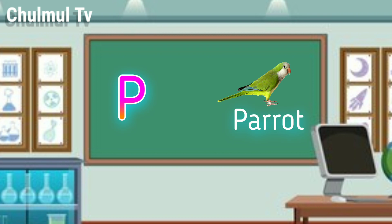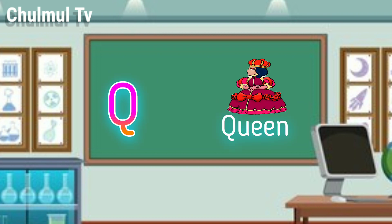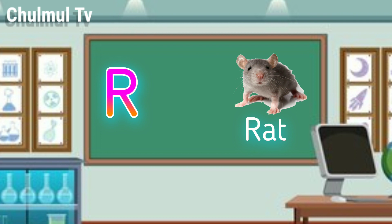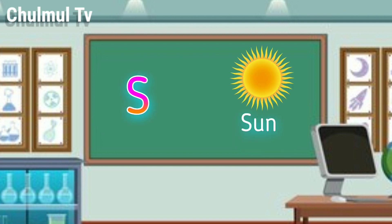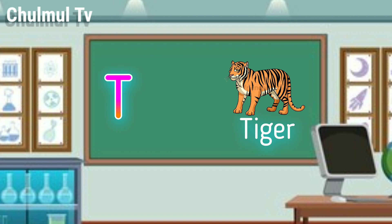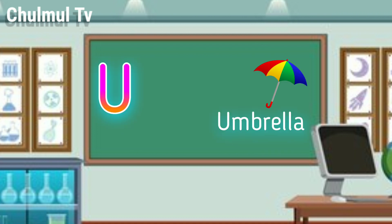P for parrot, Q for queen, O for red, S for sun, D for tiger.